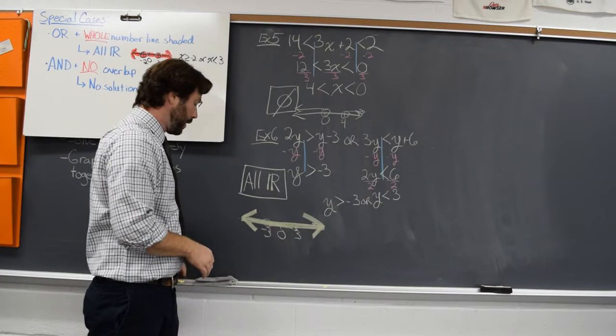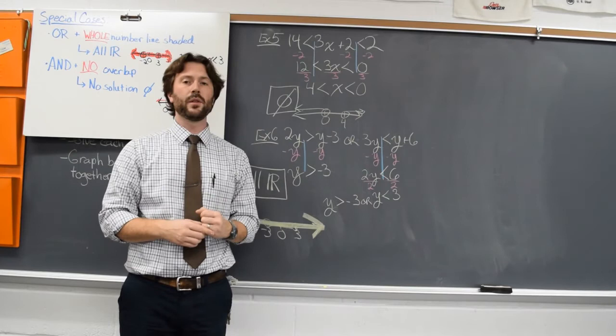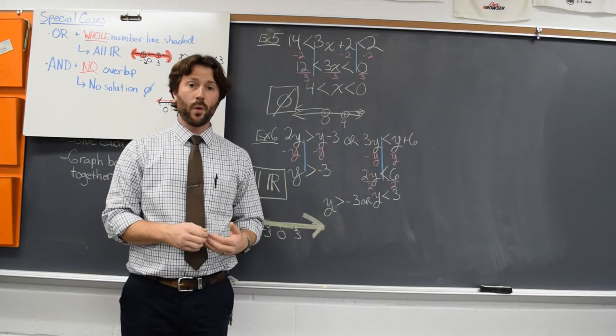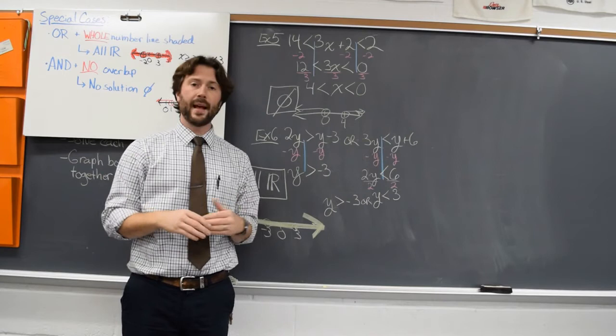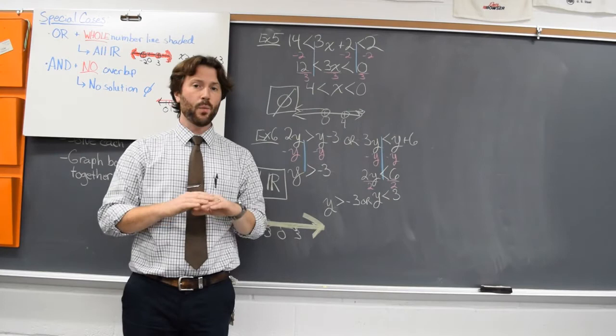With an and inequality, we solve the whole thing simultaneously — all three sides, all at once. Put both solutions on the same number line lightly, and where those solutions overlap, that's your answer — that's where we darken the shading. With an or inequality, we solve each one separately, put both graphs on the same number line, and that's it. If you have an and inequality with no overlap, there's no solution. And if you have an or inequality where the whole number line gets shaded, that's all real numbers. If you have any questions, please make sure you contact me and get those questions answered.